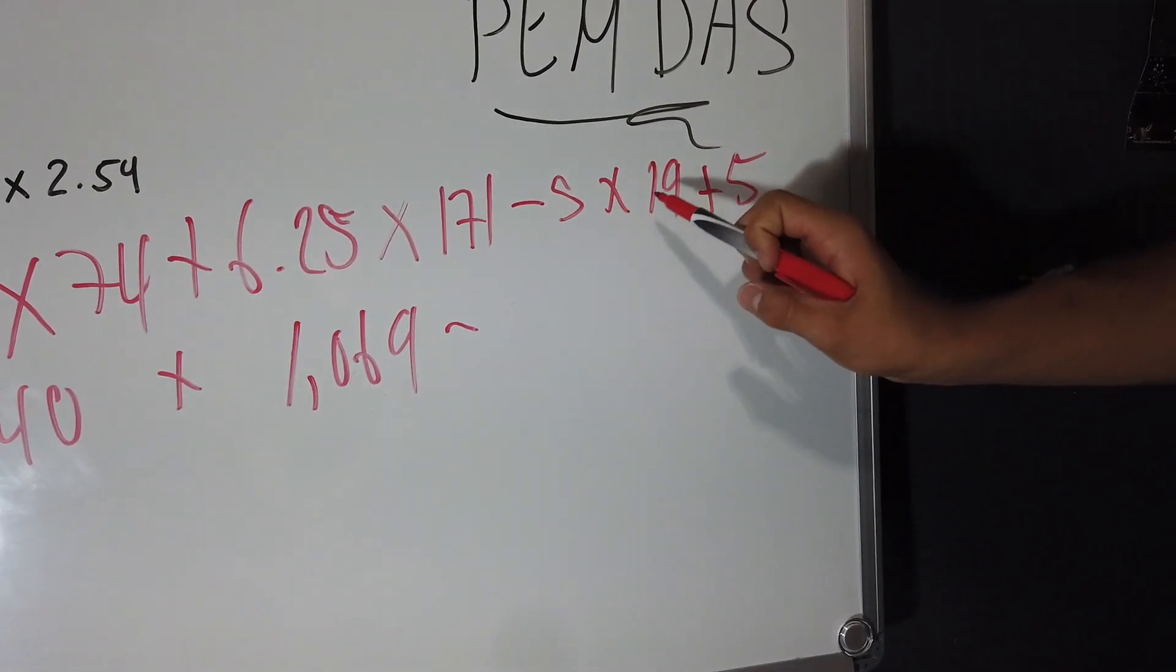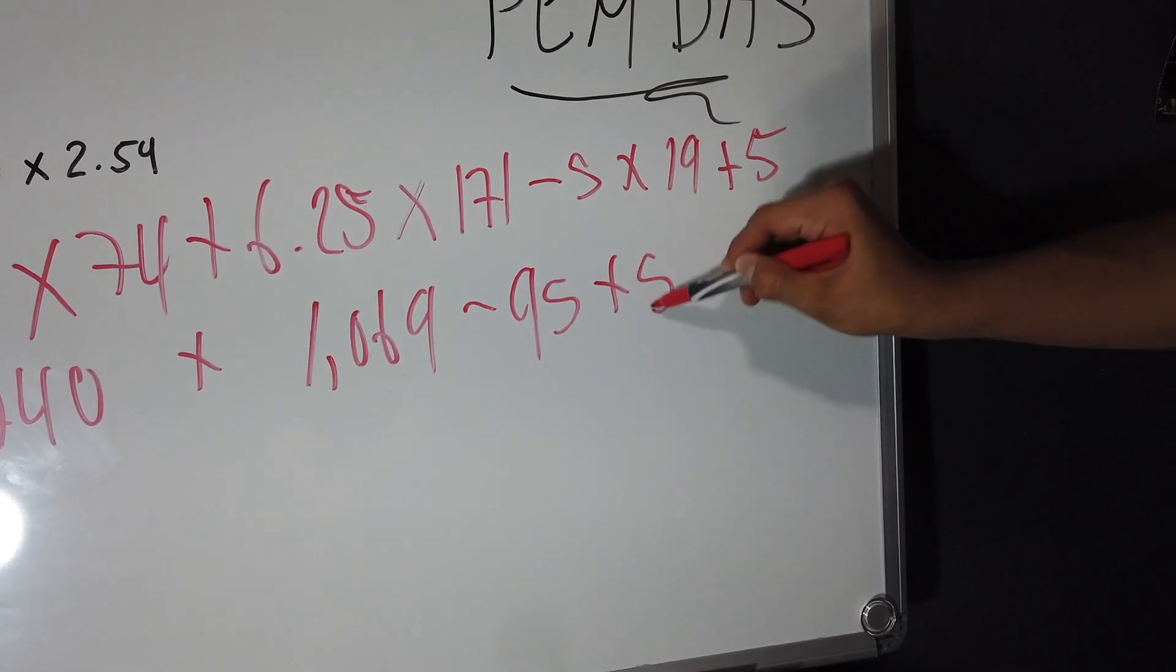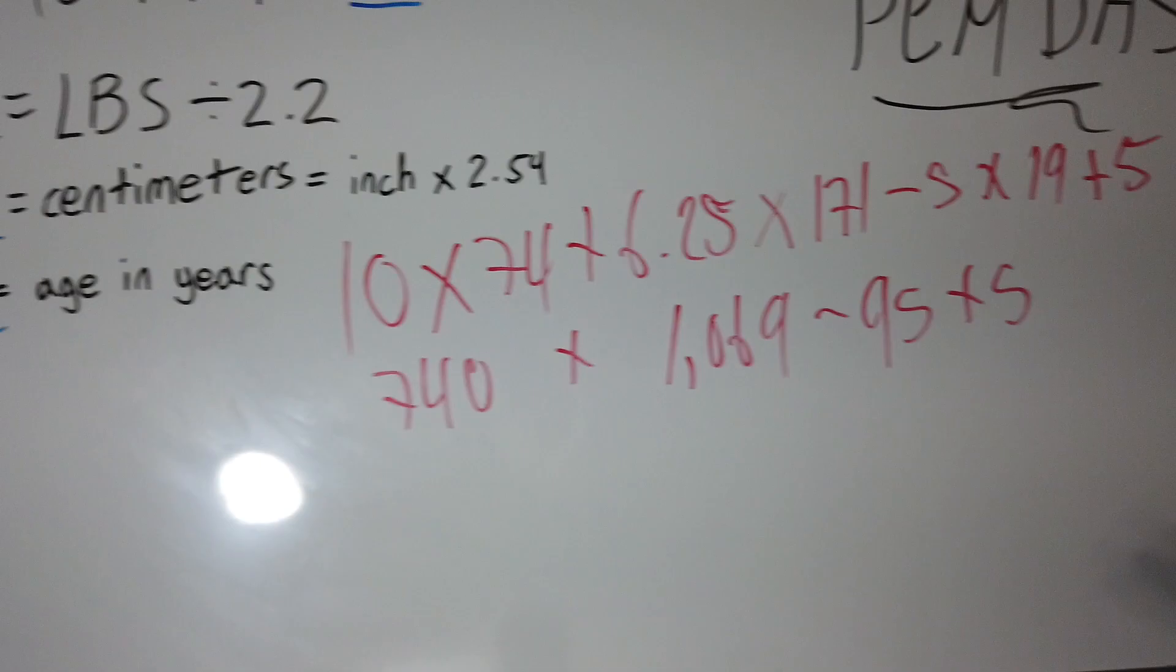And it would be 5 times 19, which is 95, plus 5. So now that's the second part of the equation.